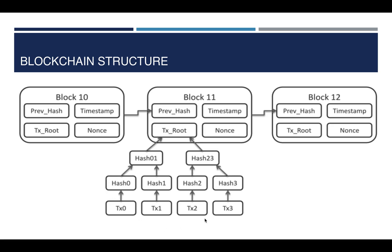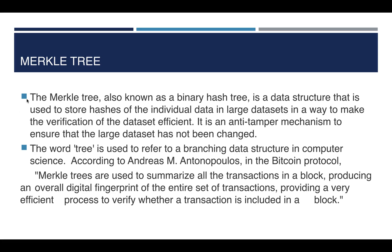The transaction root is achieved through something called a Merkle tree. A Merkle tree is a data structure — it is essentially a binary hash tree. It stores the hashes of individual transactions in a tree format, which makes verification of the data set efficient. The Merkle tree summarizes all transactions in a block, producing an overall digital fingerprint of the entire set of transactions. Because of the Merkle tree, you can easily verify whether a transaction is part of the blockchain or not.